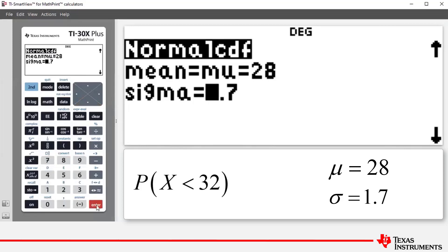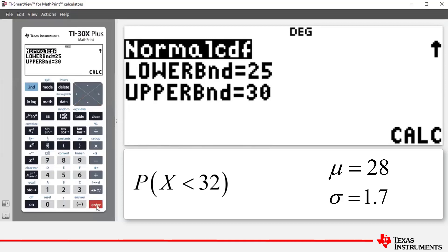Press enter to now toggle through to our lower bound and upper bound. Now in part B we want the probability that random variable X is less than 32, so our lower bound is going to be negative 1 by 10 to the power of 99, and our upper bound is going to be 32.